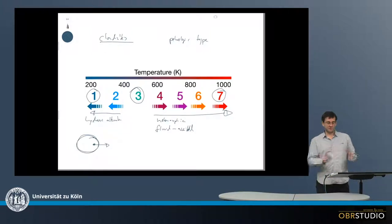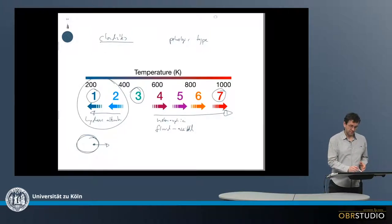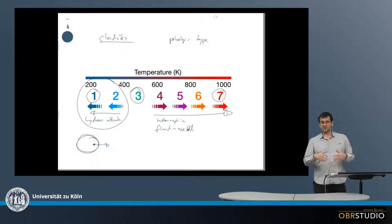Now for the carbonaceous chondrites, they are mostly of low petrologic types like CM2, CI1, CR2, there's also CR3 and so on. Only in case of CKs they can be CK4.